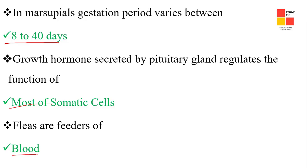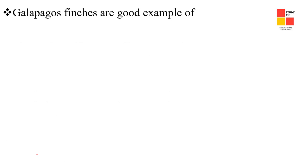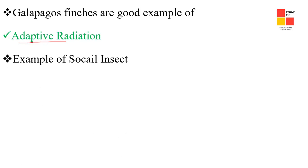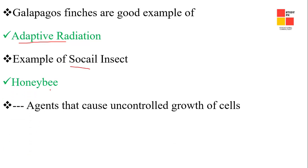Next one: platelets are the feeders of the blood. Next one: the Galapagos finches are a good example of adaptive radiation. Next one: the example of social insects is the honeybee. Next one: the agents that cause uncontrolled growth of cells — the right answer is carcinogens.